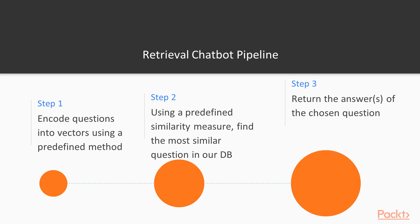In order to create a retrieval chatbot, we have to follow three steps. Step one: encode questions into vectors using a predefined method. Step two: using a predefined similarity measure, find the most similar question in our database. Step three: return the answers of the chosen question. We're going to discuss each step in detail.